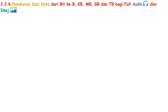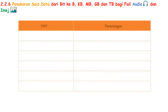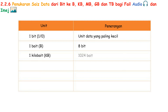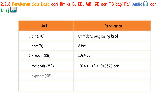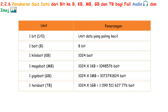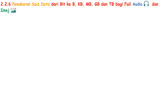The last part of this chapter is data size. Bit is the smallest unit of data — 1 bit means 1 or 0. 1 byte is 8 bits. 1 kilobyte is 1,024 bytes. 1 megabyte is 1,024 kilobytes. 1 gigabyte is 1,024 megabytes. 1 terabyte is 1,024 gigabytes.